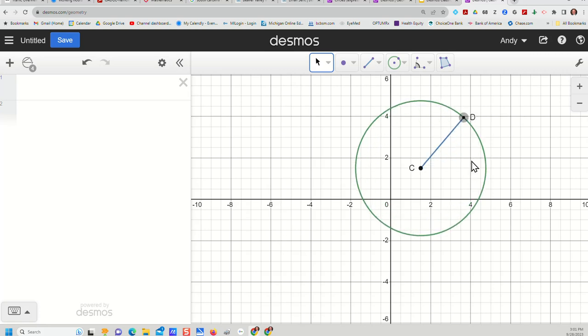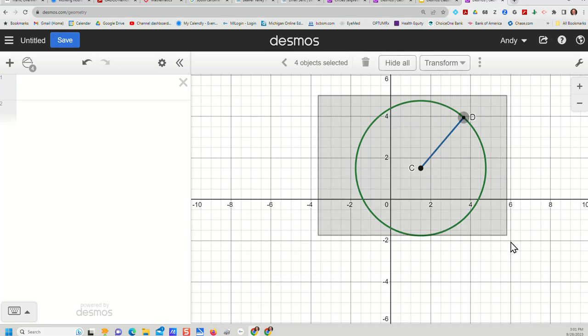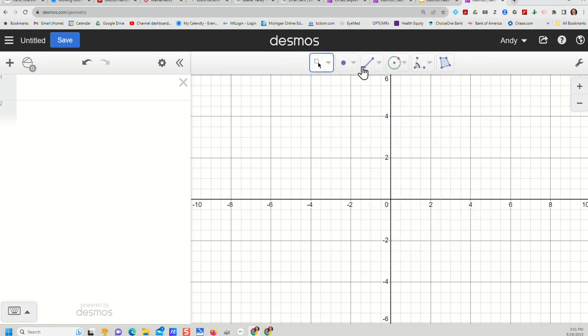Now we can also do some other interesting things with this circle, maybe we want to have a circle with a diameter. Well I can also start with a radius or a diameter and then build the circle around it. So I'm going to go ahead and select using box select everything I've created so far and I'll delete them.